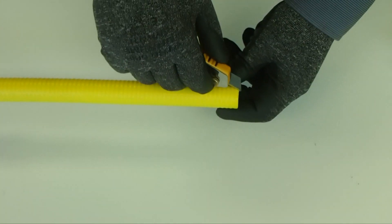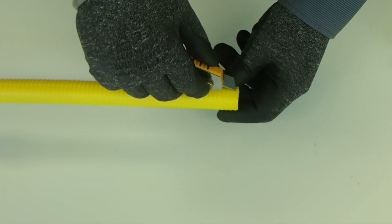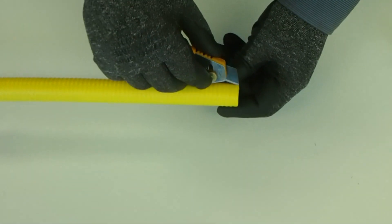Remove the yellow warning label from the fitting assembly if present. Do not use a tube cutter for this operation.